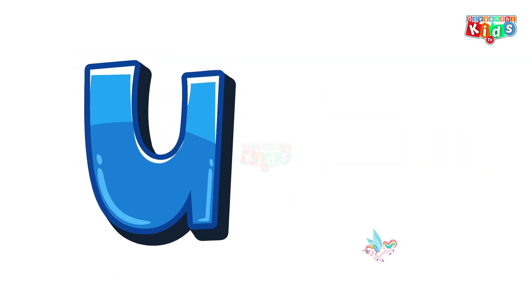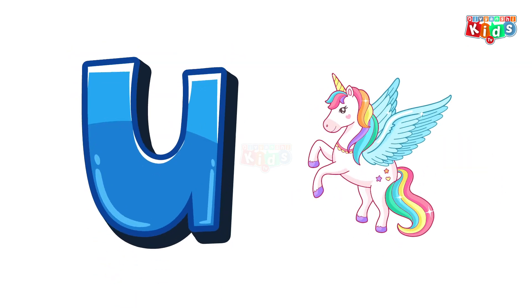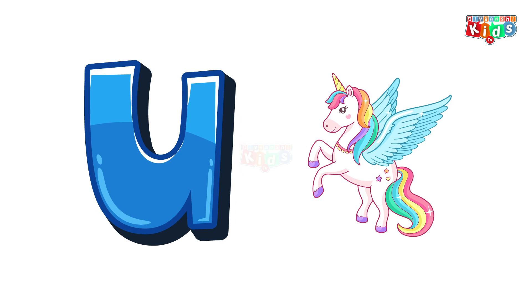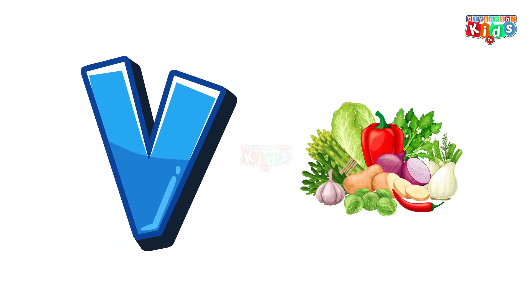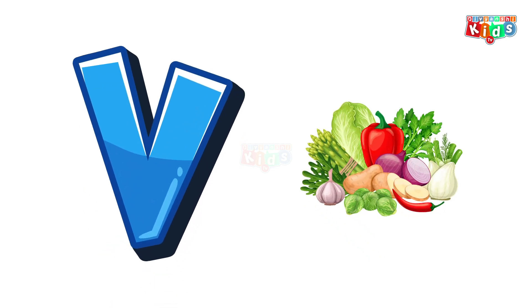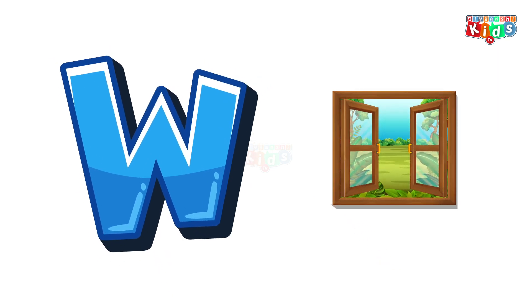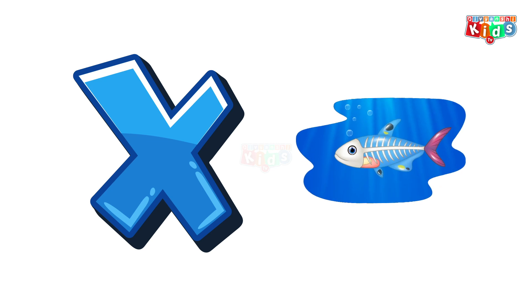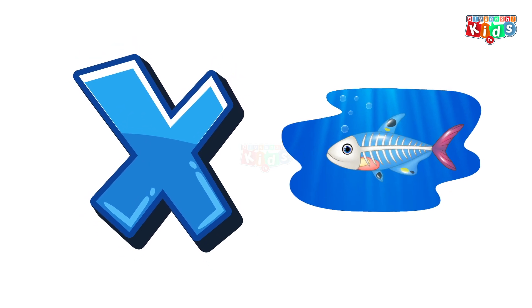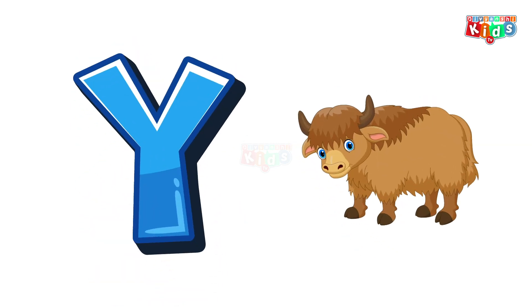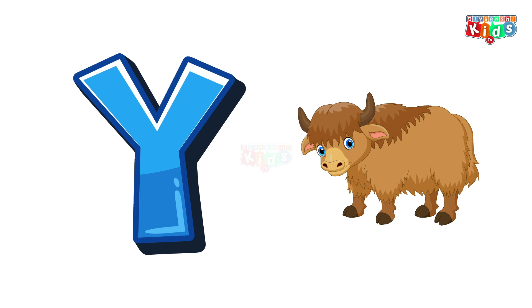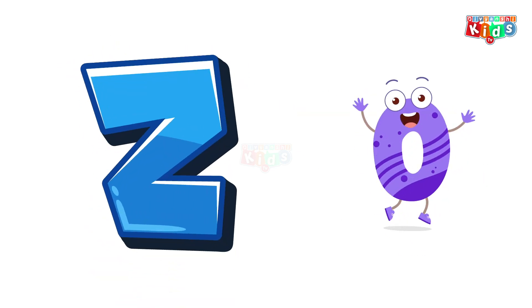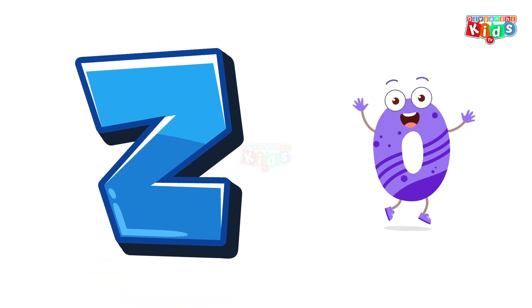U for Unicorn. U, U. Unicorn. V for Vegetables. V, V. Vegetables. W for Windows. W, W. Windows. X for Extra Fish. X, X. Extra Fish. Y for Yak. Yak. Z for Zero. Z, Z. Zero!